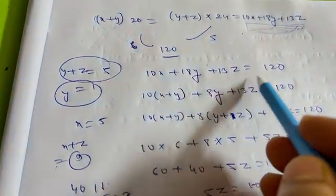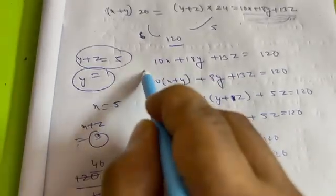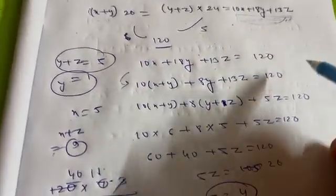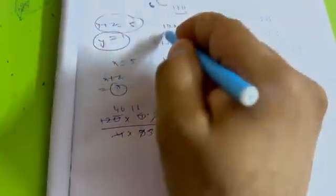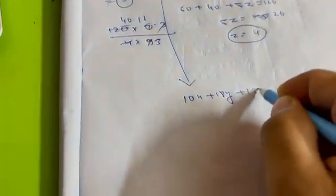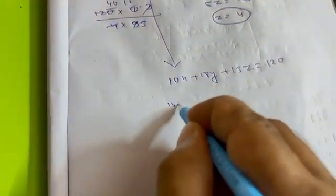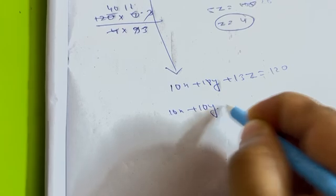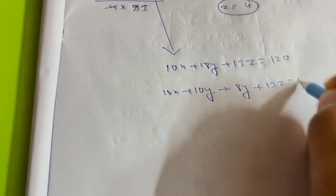There is a calculation trick here. We split 10x + 18y + 13z = 120 as: 10x + 10y + 8y + 13z = 120, grouping terms to match our known combined efficiencies.